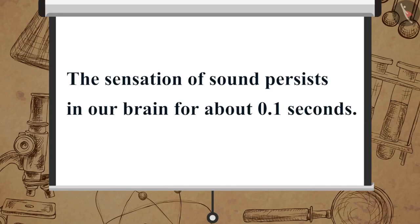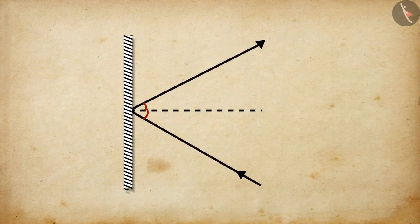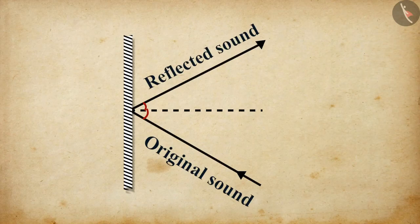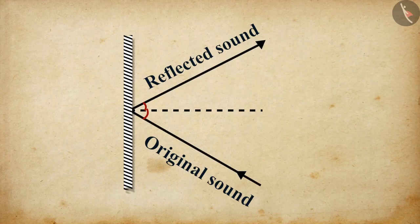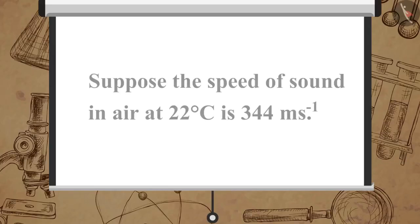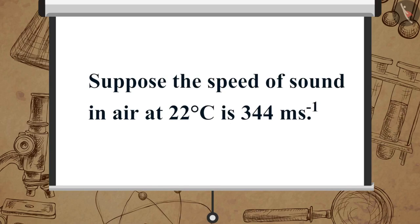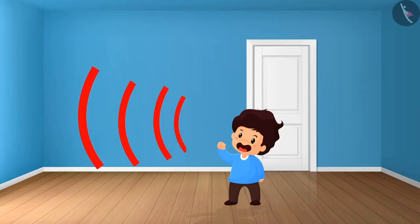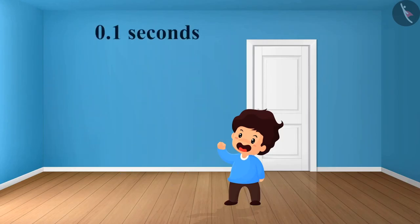The sensation of sound persists in our brain for about 0.1 seconds. To hear a distinct echo, the time interval between the original sound and the reflected sound must be at least 0.1 seconds. Now, suppose the speed of sound in air at 22 degrees Celsius is 344 meter per seconds. The sound must hit the obstacle and reach to the ear of the listener after 0.1 seconds.